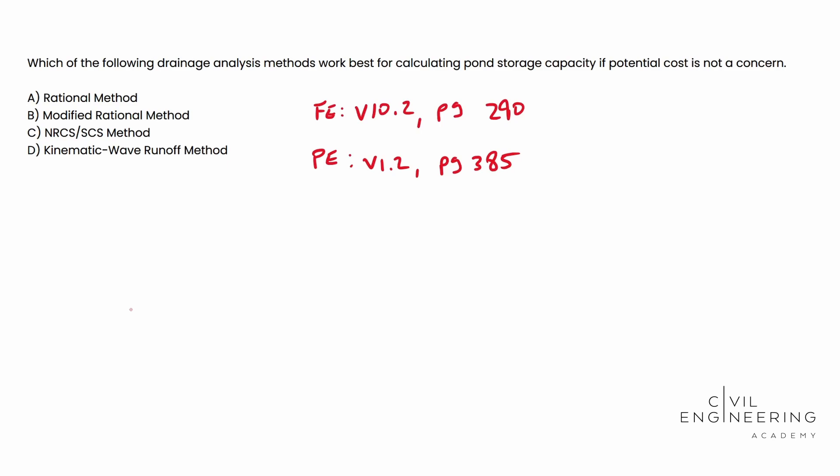In this case, we're engineers, we want to cover our tail. We want to make sure nobody gets hurt. Nobody gets flooded out of their homes. So which of the following drainage analysis methods works best for calculating pond storage capacity if potential cost is not a concern?